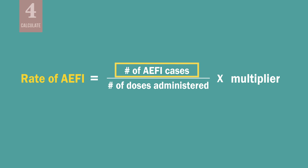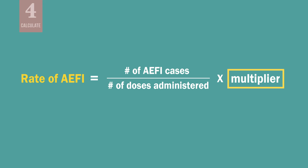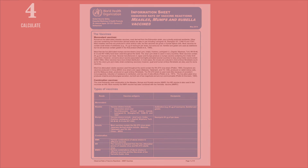Then, use the data to calculate the rates of reported AEFIs. An AEFI rate is the number of cases reported for a specific AEFI during a specific time period — such as a month or quarter — divided by the total number of doses administered of that antigen. For antigens administered more than once, such as OPV, calculate AEFI rates by first, second, or third dose, using the number of doses administered for that dose as the denominator. At the subnational level, you might calculate the rate per 1,000, 10,000, 100,000, or even per 1 million.